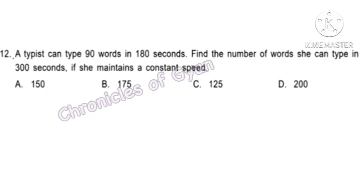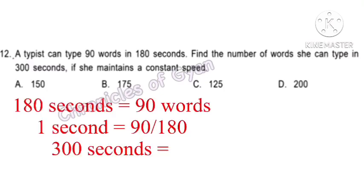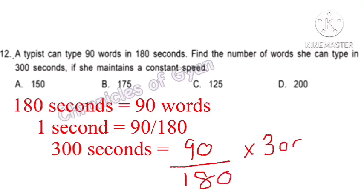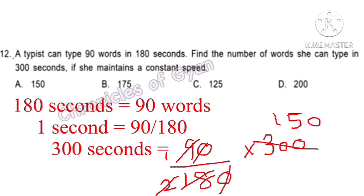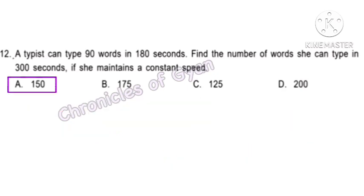Question 12. A typist can type 90 words in 180 seconds. Find the number of words she can type in 300 seconds at constant speed. In 180 seconds she types 90 words, so in one second she types 90/180 words. In 300 seconds she types 90/180 times 300, which equals 150. Hence, option A — 150 words.